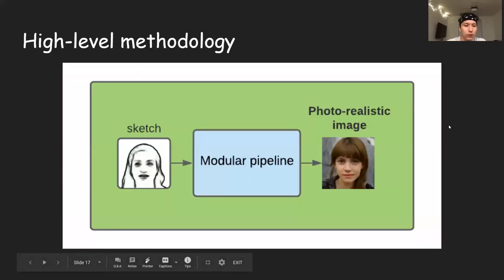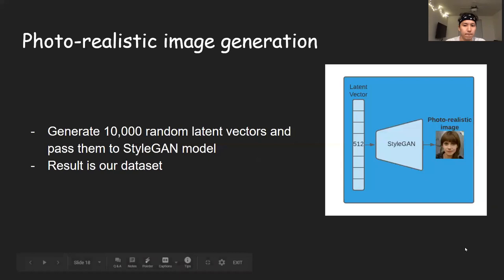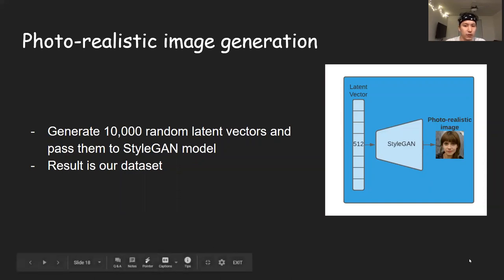Now let's get to our actual contribution. The ultimate goal is to generate photorealistic images based on rough sketches, incorporated in several steps of our pipeline. First, we had to create a dataset, and we do not use any existing dataset. Instead, we generated our own dataset using a pre-trained StyleGAN model, which uses a latent vector as input and creates a photorealistic image as output. The advantage is that we can generate as much data as we want — in our case, we generated 10,000 random photorealistic images.